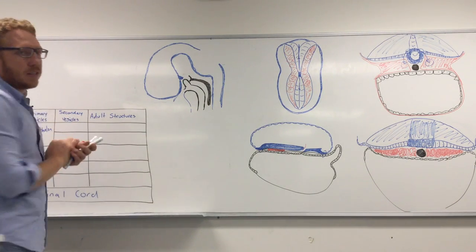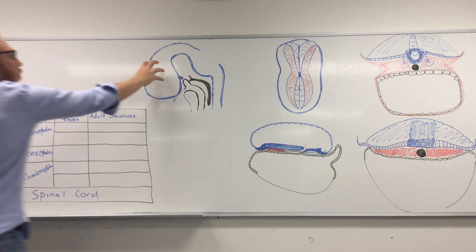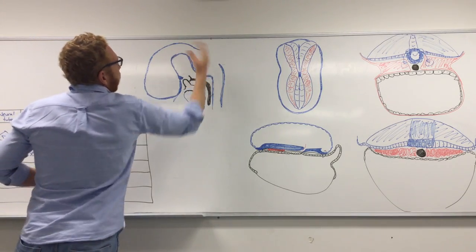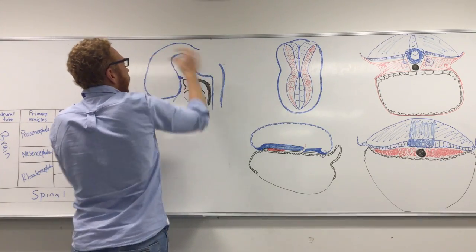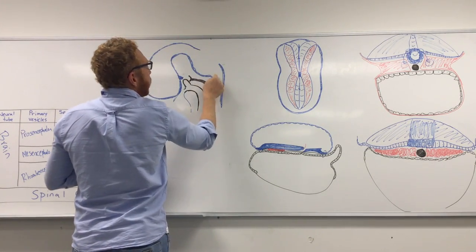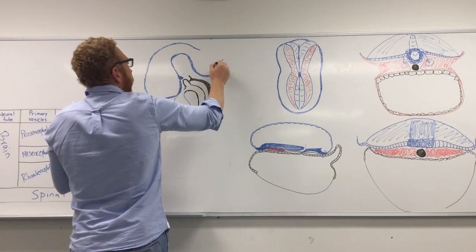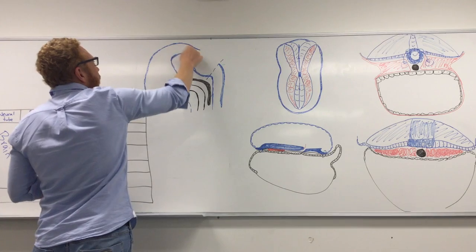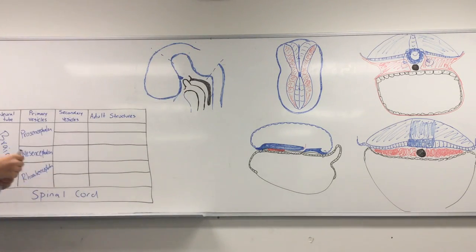Now at about week five, these vesicles will segment further. You can see they're bent — we've got a turn. The first flexure between the spinal cord and the rhombencephalon is called the cervical flexure, and the flexure through the mesencephalon is called the cephalic flexure. At week five these vesicles start to separate further.